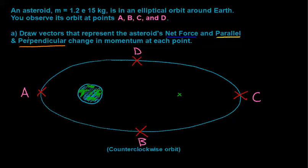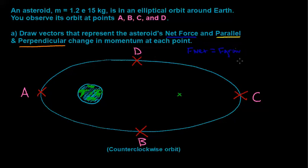Part A says to draw vectors that represent the asteroid's net force as well as the parallel and perpendicular change in momentum at each point. The first thing we want to draw is the net force vector, because the net force on an ellipse at any given point is always going to be equal to the gravitational force caused by Earth pulling in this asteroid. The gravitational force vector at any given point is going to point from the asteroid in toward Earth.